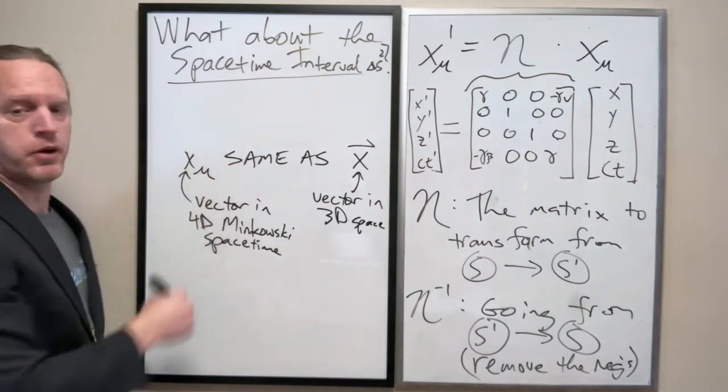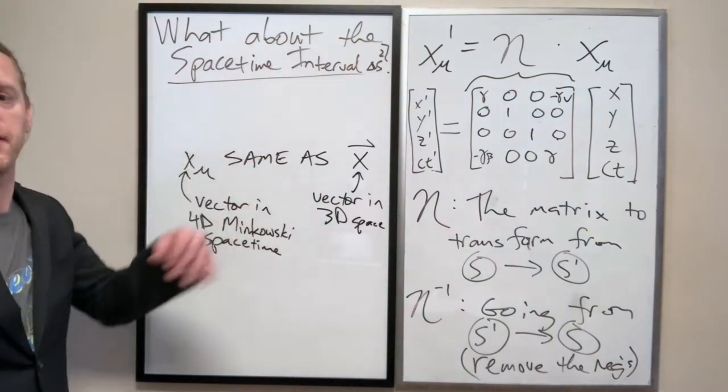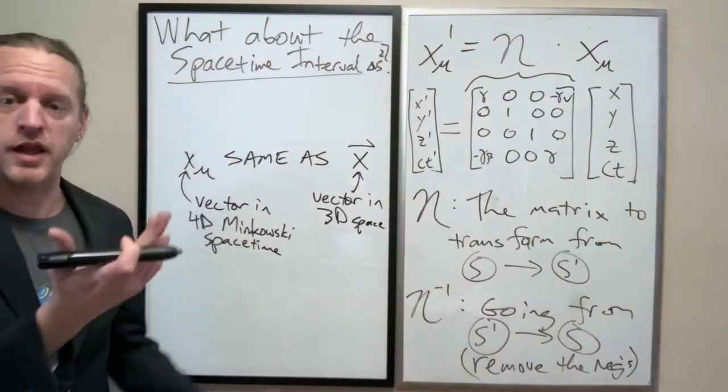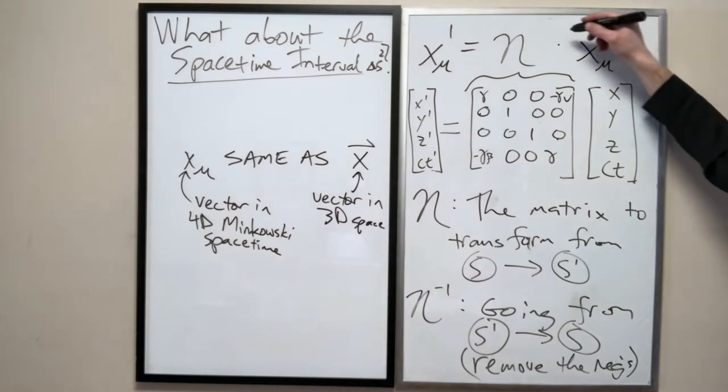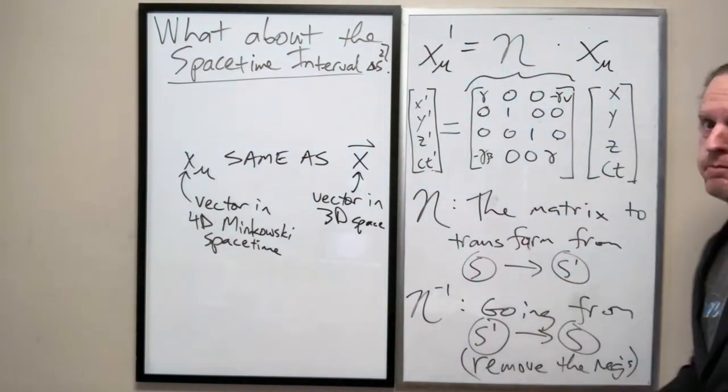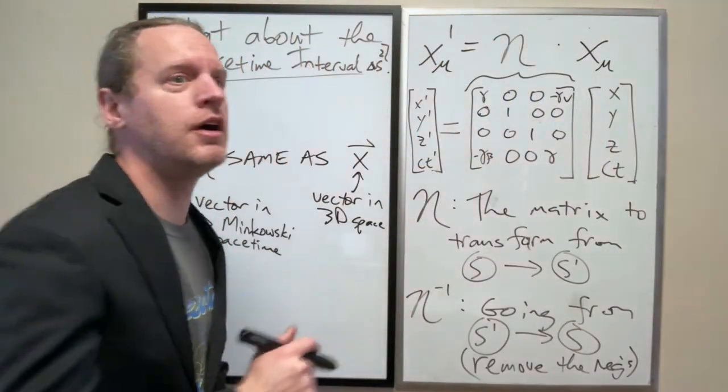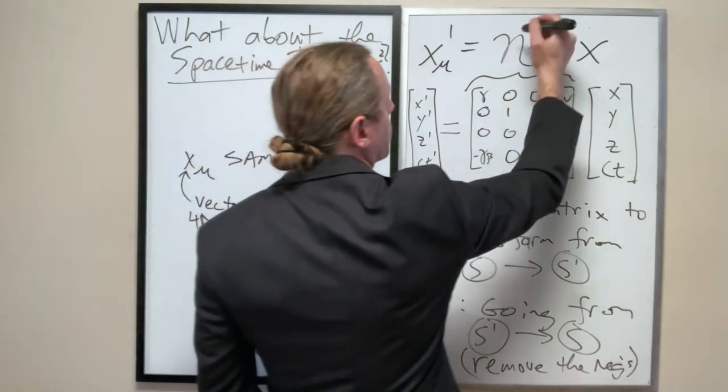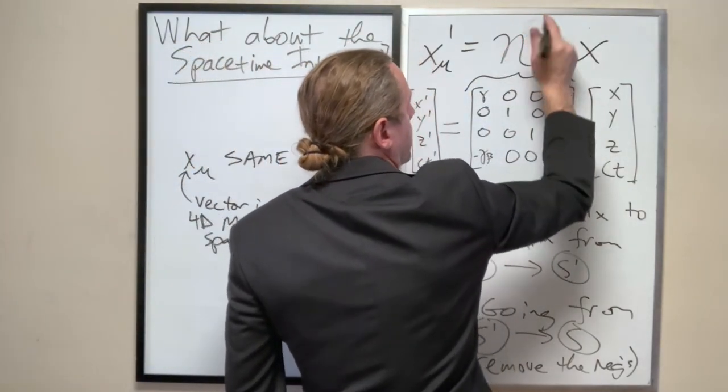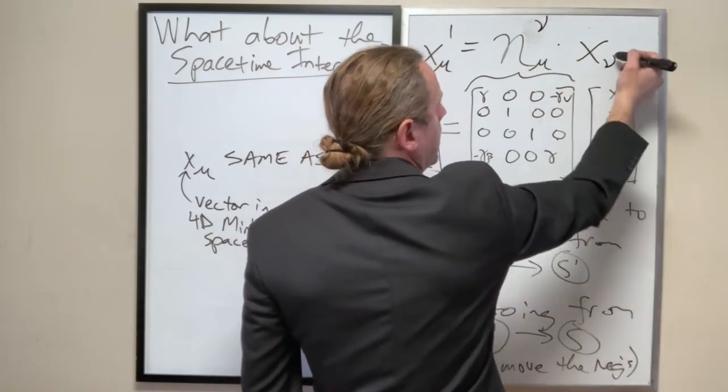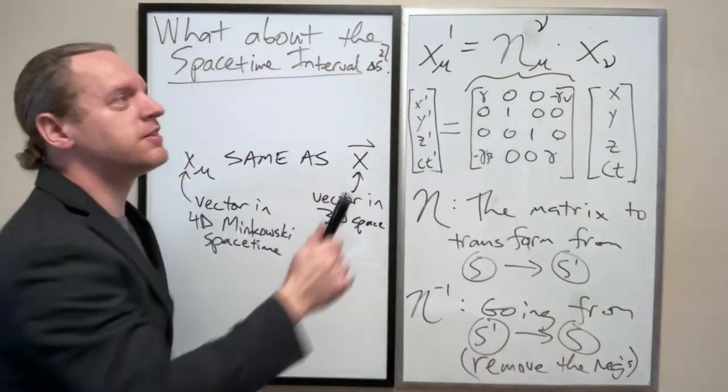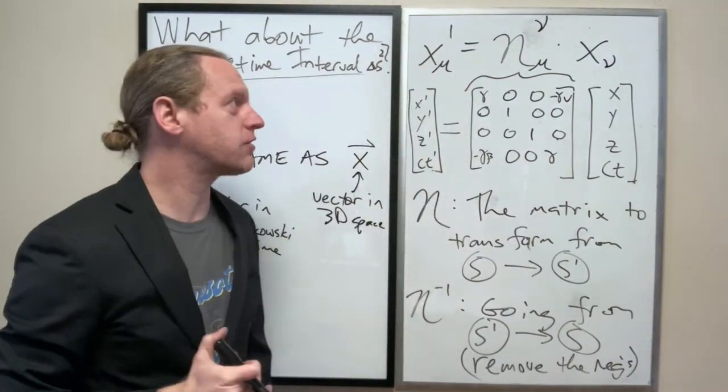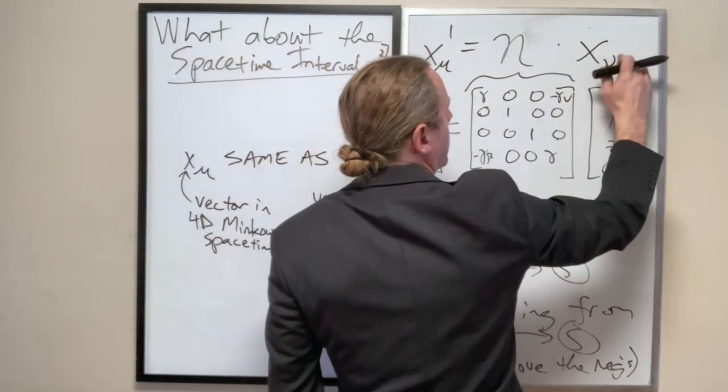So all you have to do is take your column vector for S and then act on it with this matrix and you get that. So when we get to linear algebra, by the way, as you're seeing, I'm kind of instinctively doing it, but you start working from right to left. So that's kind of the order that we do things according to proper matrix multiplication. And by the way, eta inverse, by the way, this is going from S prime to S. And any guess what that is? Just remove the negatives.